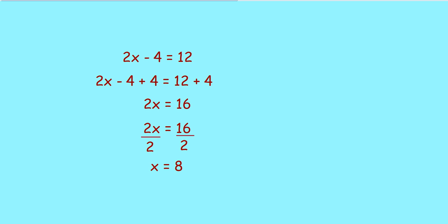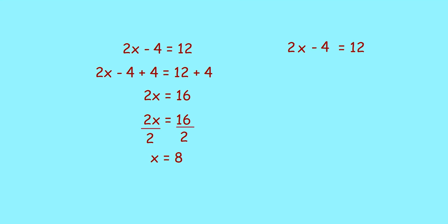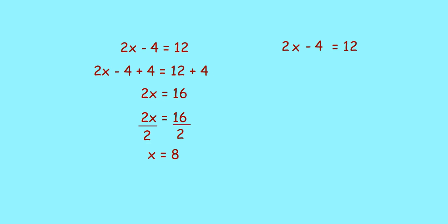Now, there is another way to solve it. Let us see. 2x minus 4 is equal to 12 is our equation. Here, in the second step, you add 4 to minus 4 to remove 4 here. So, if I don't do it, this minus 4, you have to plus 4 in the other side.